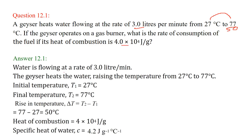So what all is given? Let us write them. Water is flowing at the rate of 3 liters per minute and the geyser heats the water, raising the temperature from 27 to 77 degree centigrade. That is initial temperature T1 is 27, final temperature T2 is 77. The rise in temperature T2 minus T1 is equal to 50 degree centigrade. The heat of combustion is also given as 4 into 10 to the power 4.